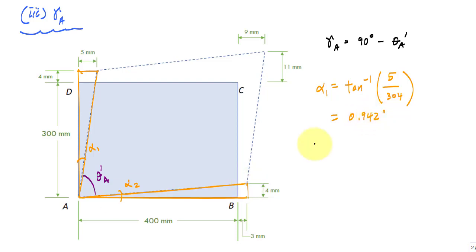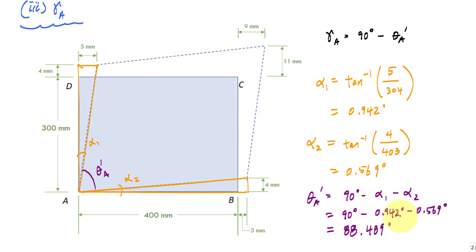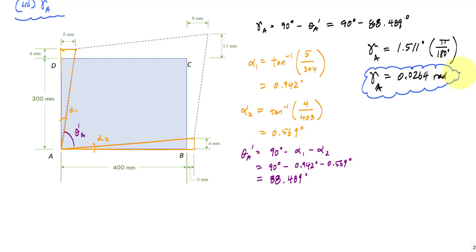Alpha 2 is the inverse tangent of 4 over 403, which is 0.569 degrees. Looking at the drawing, theta A prime equals 90 minus alpha 1 minus alpha 2, which is 88.489 degrees. Plugging into the shear strain definition, gamma A equals 1.511 degrees. Converting to radians by multiplying by pi over 180 gives 0.0264 radians. Because the angle closed from 90 degrees, this is a positive shear strain; if it had opened past 90 degrees, it would be negative.